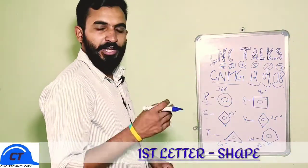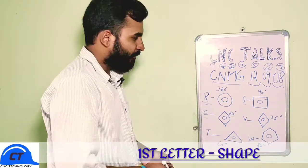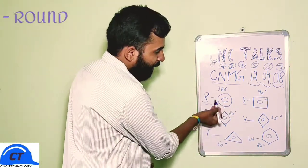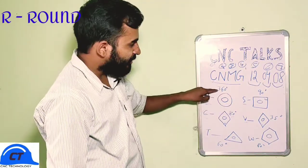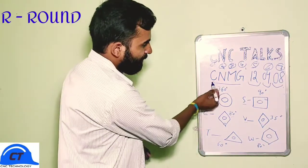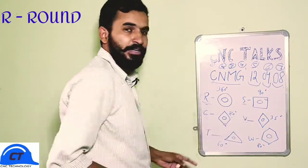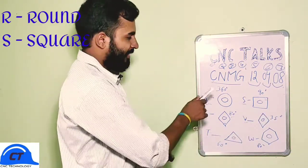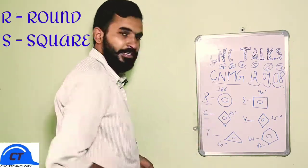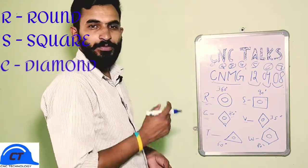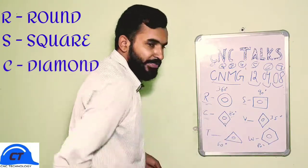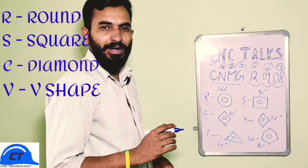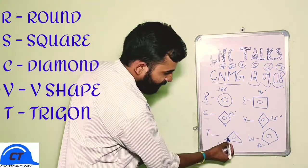The letter at position 1 defines the shape of an insert. If the letter is R, it defines a round insert with 360 degrees of angle. If the first letter is S, it defines a square insert where the angle between two faces is 90 degrees. C defines a diamond insert with an angle of 80 degrees. V defines a V-shape insert of 35 degrees. T defines a triangle insert of 60 degrees.